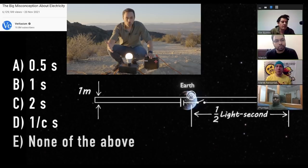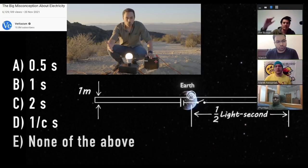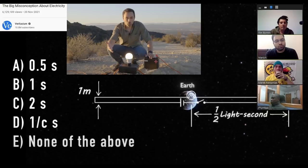What he wants to get at is that the correct answer is one over c — the actual straight-line distance from the battery to the light bulb. The distance between the wires is one meter, so the time would be one over c, not one second as you might expect from the electric field traveling down the wire.